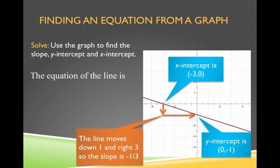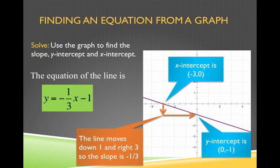So I have my slope, my m, and I have my b, my y-intercept. And I can use these two numbers and write the equation of my line. y equals m, negative 1/3, x plus b, which for me, my b here is negative 1.